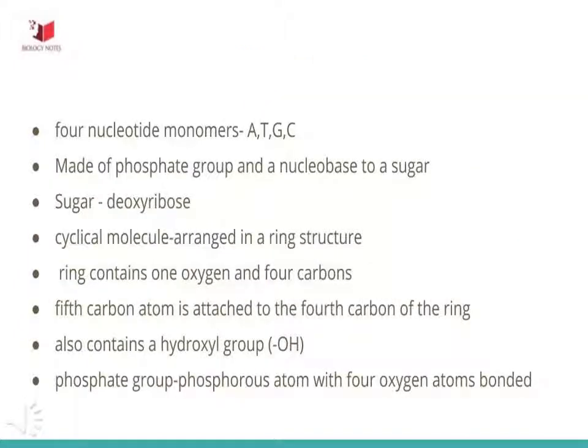The sugar and acid in all four monomers are the same. All four nucleotides — A, T, G, and C — are made by sticking a phosphate group and a nucleobase to a sugar. The sugar in all four nucleotides is called deoxyribose. It's a cyclical molecule; most of its atoms are arranged in a ring structure. The ring contains one oxygen and four carbons, and a fifth carbon atom is attached to the fourth carbon of the ring. Deoxyribose also contains a hydroxyl group (O) attached to the third carbon in the ring.